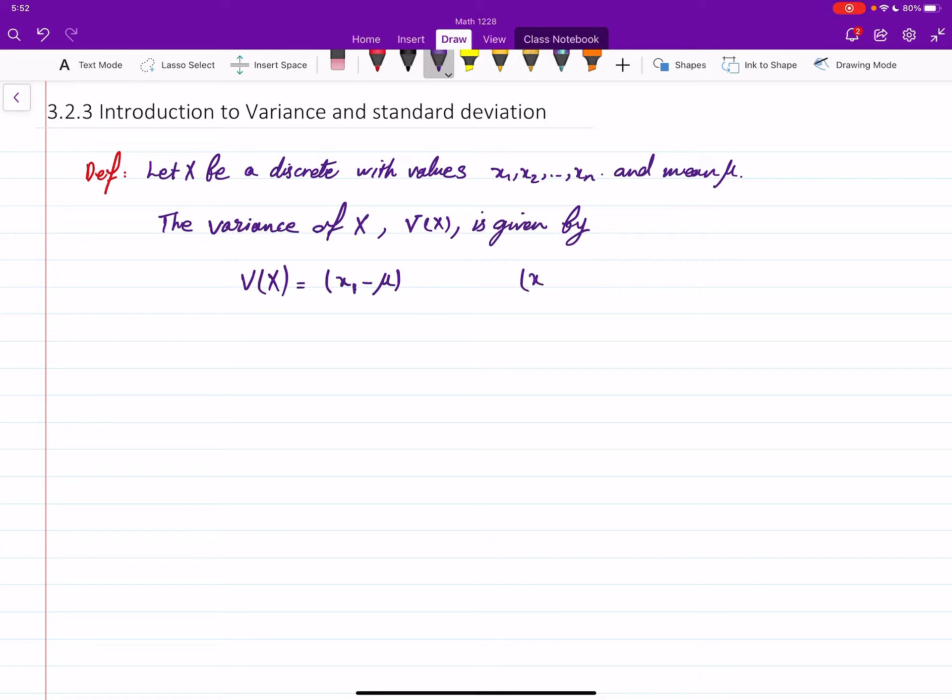Then you do x₁ minus μ, x₂ minus μ, x₃ minus μ up to xₙ minus μ. Then square each one, then multiply each one by the pdf, or the probability of that random variable being equal to that value. The probability of X being equal to xₙ, then add all these guys together.